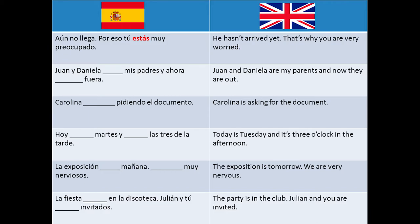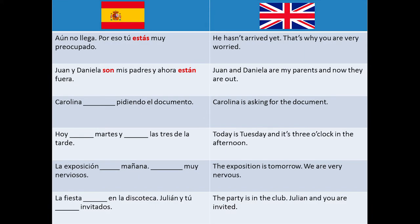'Juan y Daniela mis padres y ahora fuera' — Juan and Daniela are my parents and they are out now. In the first blank, we use the verb ser because we are defining them as my parents. For the second blank, we use the verb estar as we are expressing that the parents are in some place.